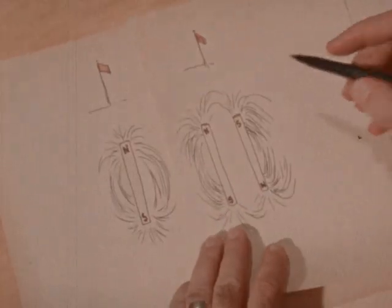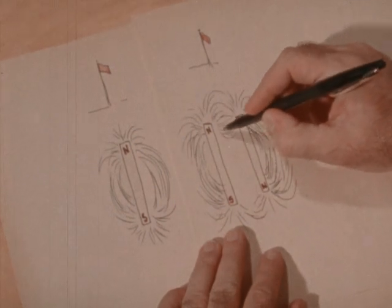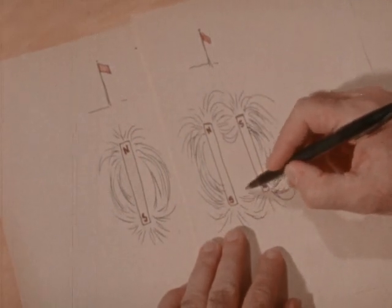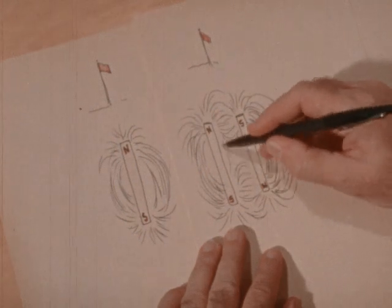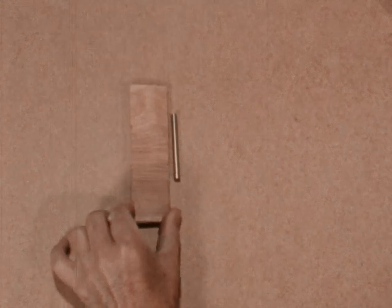North and south poles attract each other, whether they're at the opposite ends of one bar magnet or at the ends of two bar magnets, as we see here. Now, let's change the position of the magnets.